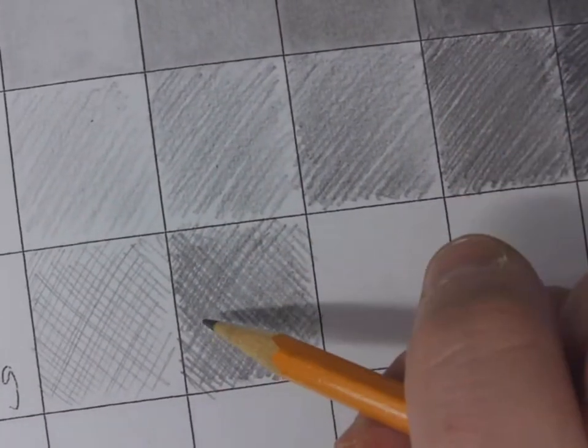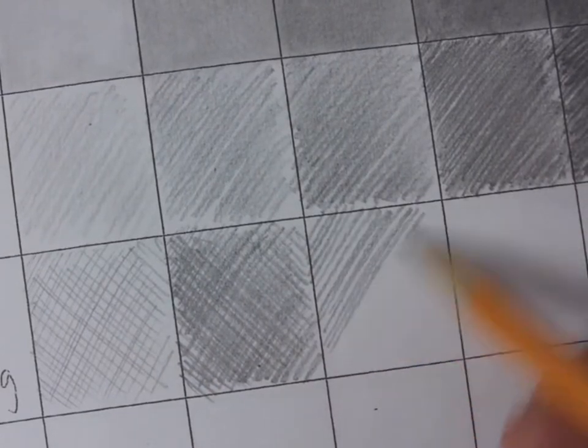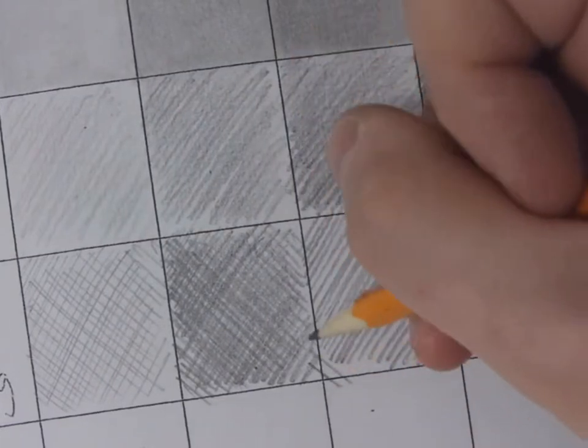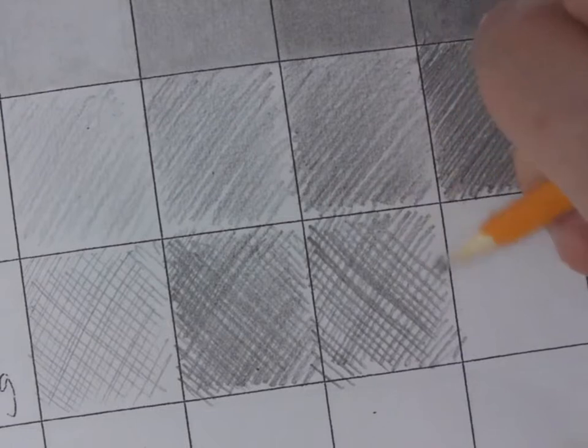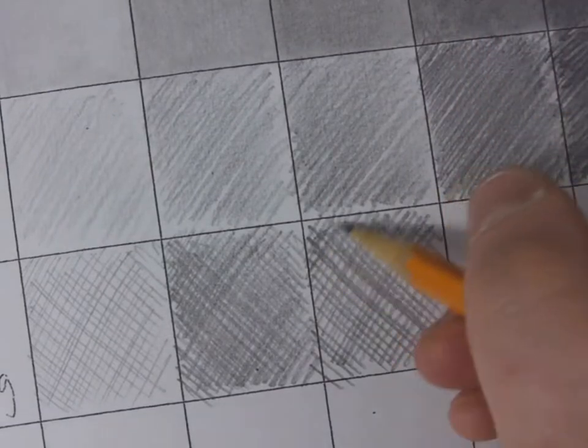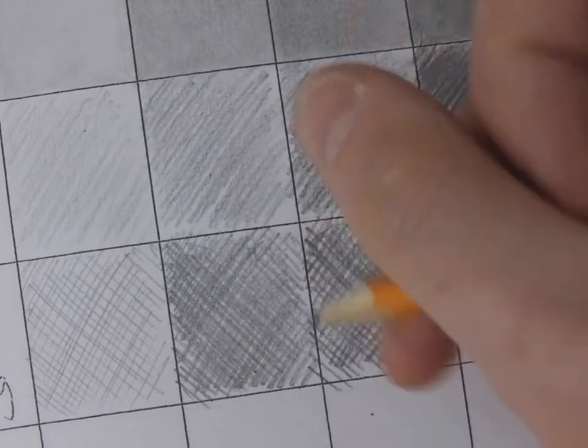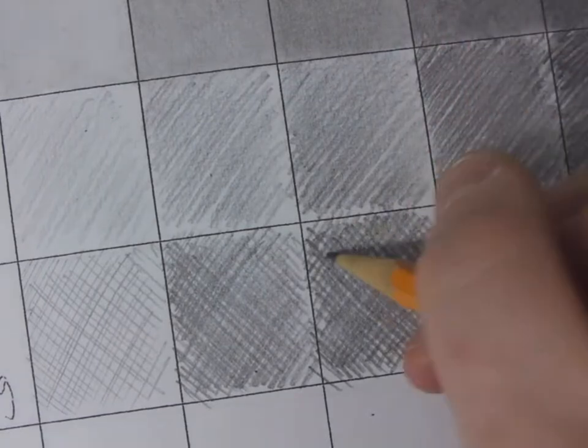So the next one we'll do three layers of this. Okay, so hatch in one direction, go over, cross over, then back layer two, okay, and layer three.